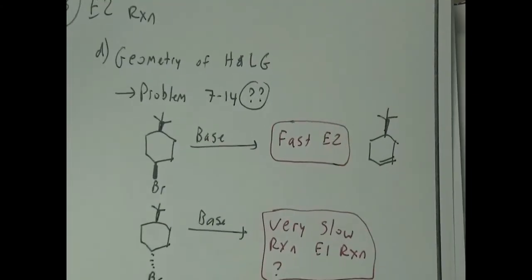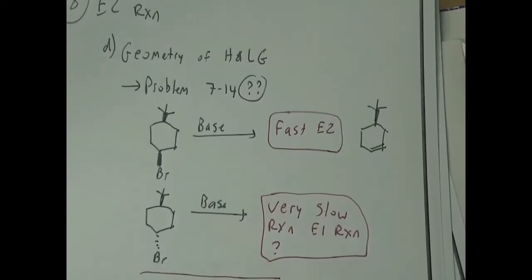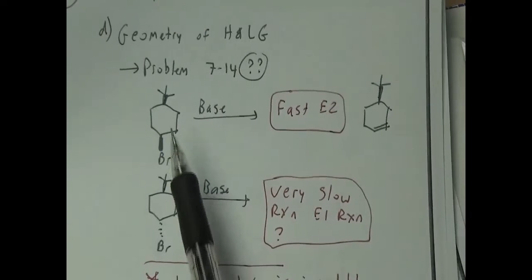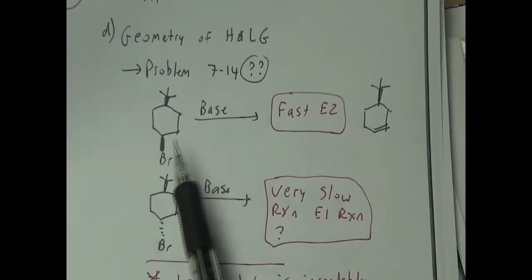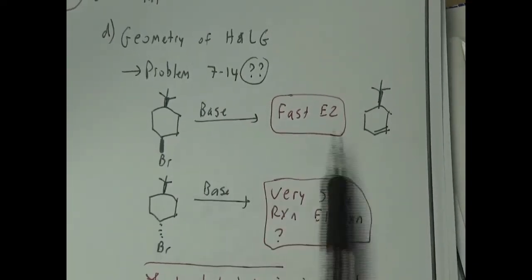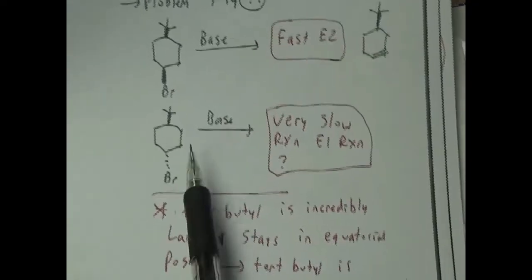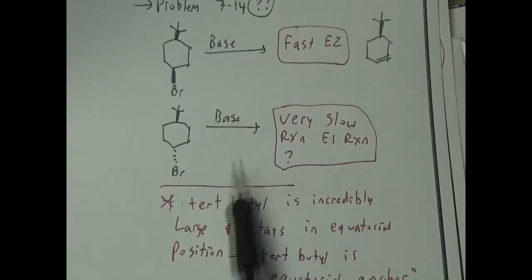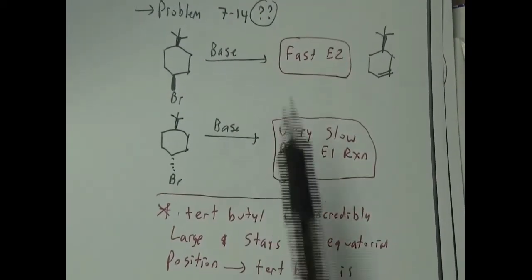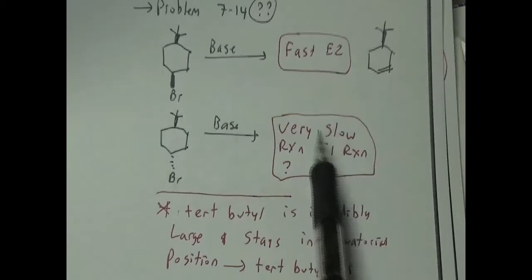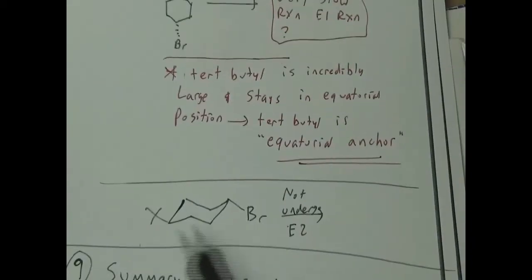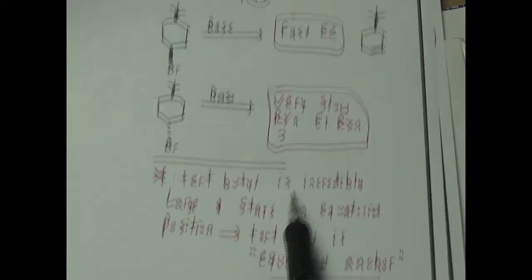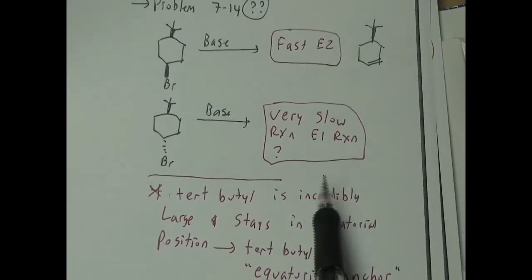Here's another cyclohexane example I went through last time — one substrate undergoes a fast E2 reaction, the other does not. This is one for you to try yourself; it was also a homework problem, so the key is in the solution guide.